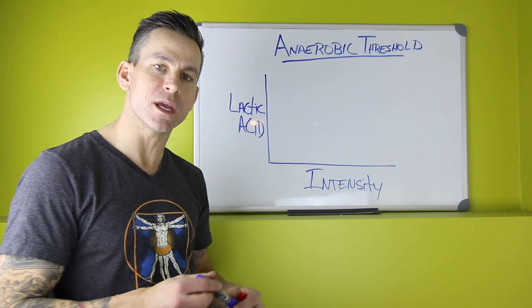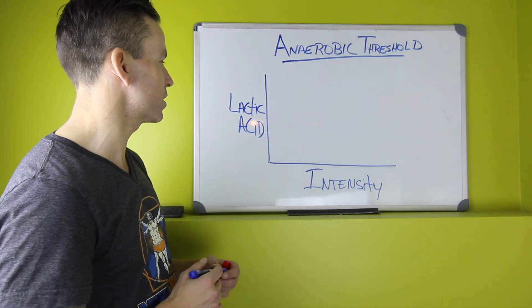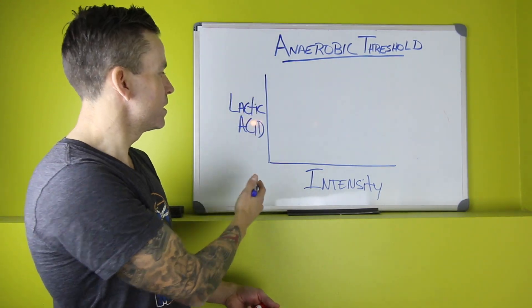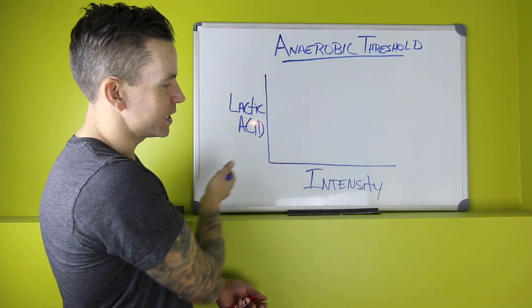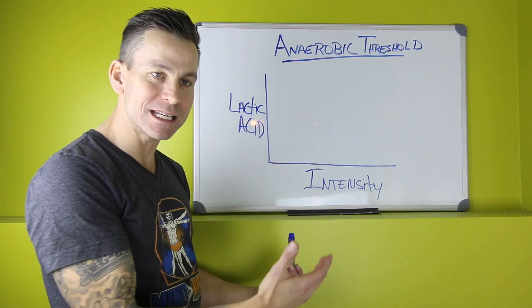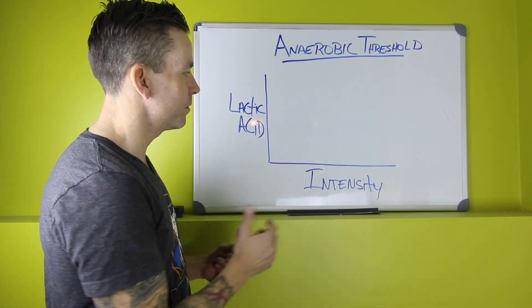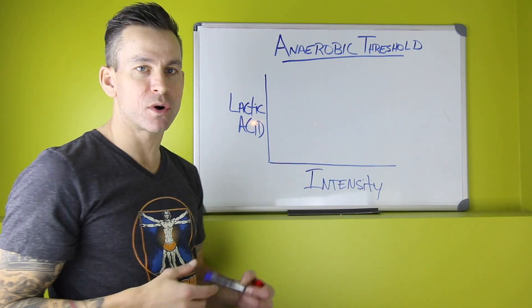We start to pool up this lactic acid. If I was to demonstrate that on this chart, we have our lactic acid on the left side here and the intensity on the bottom. That might be expressed as pace or as heart rate. We can measure it both ways.